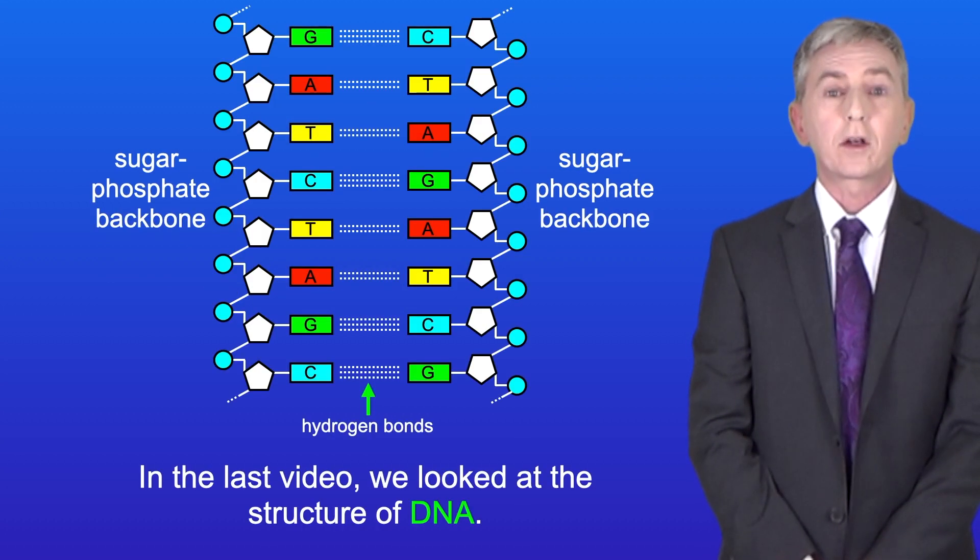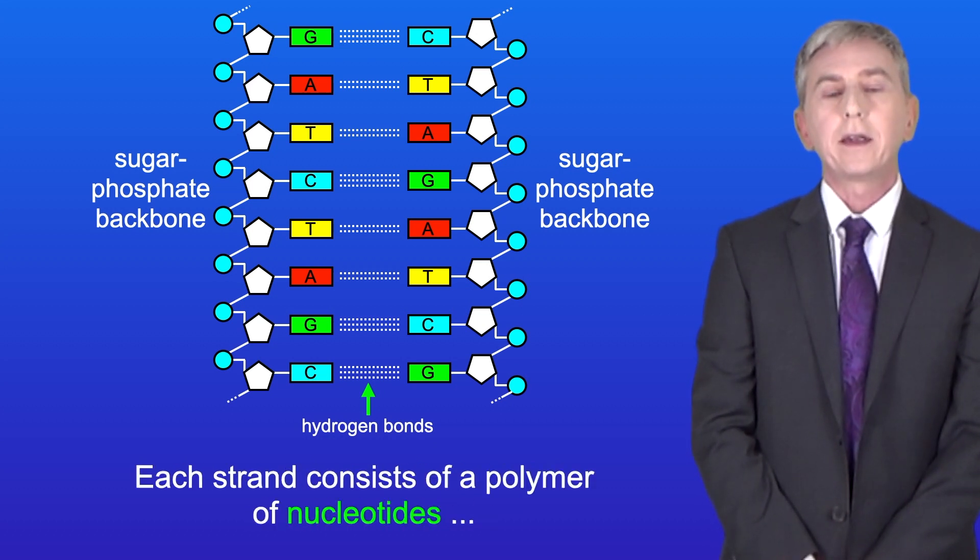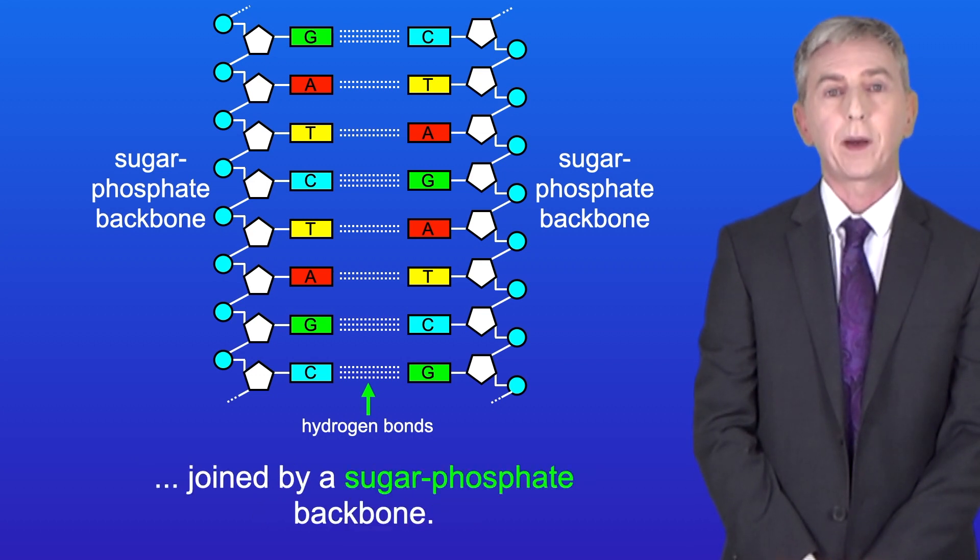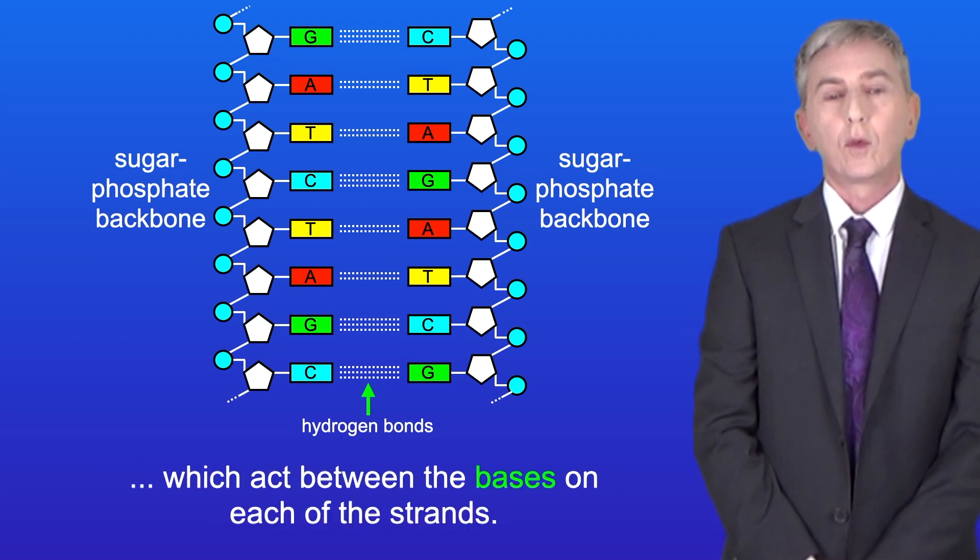In the last video we looked at the structure of DNA. We saw that DNA is a double-stranded molecule and each strand consists of a polymer of nucleotides joined by a sugar phosphate backbone.